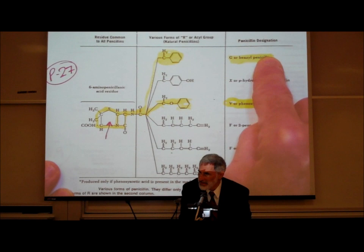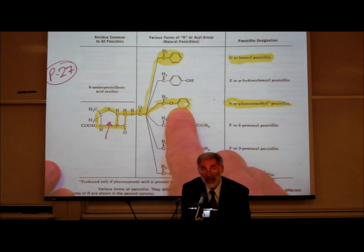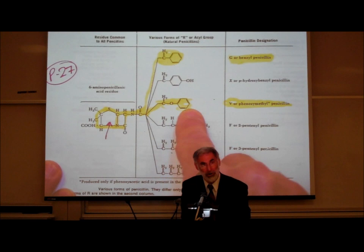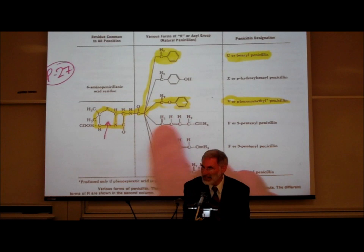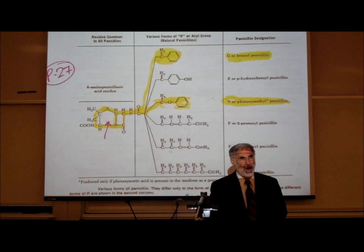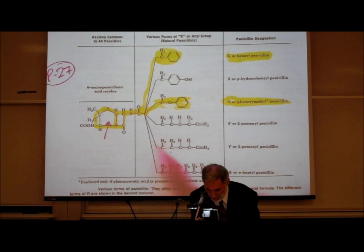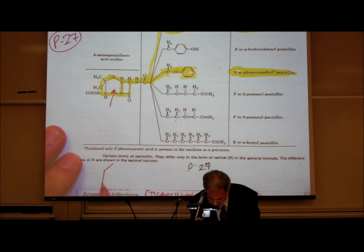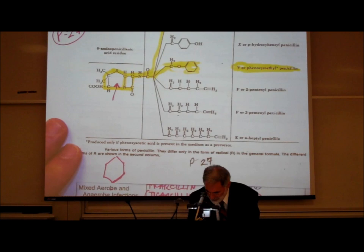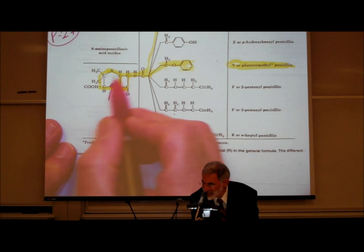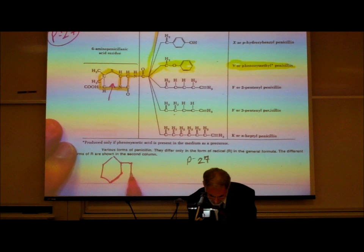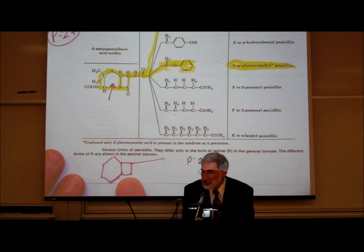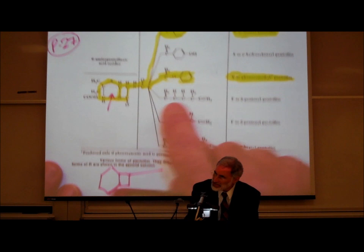The way they create all the other penicillins is by modifying the side chain attached to the garage. A cephalosporin basically doesn't look like a five-sided pentagon — it looks like a six-sided hexagon with an attached garage and a side chain. Its mechanism of action and uses are very similar to that of penicillin. Structurally it looks very similar.